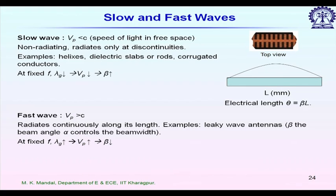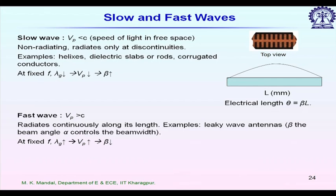Just opposite to this is the fast wave, where the phase velocity is greater than c. The disadvantage of fast wave is that it radiates continuously along its length if it is a semi-open structure. Rectangular waveguide supports fast wave, but since it is a closed structure it does not radiate along its length. However, a semi-open structure like microstrip line will radiate continuously along its length and cannot be used as a wave guiding structure in that mode.